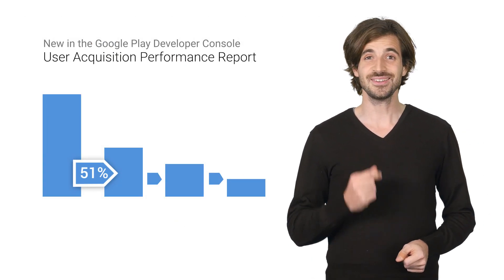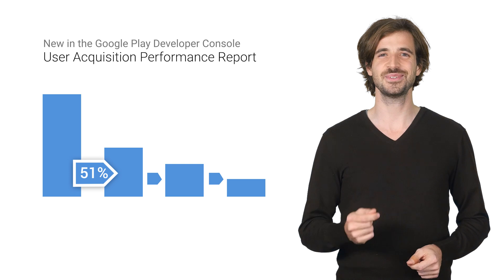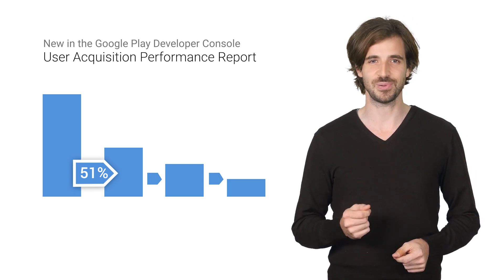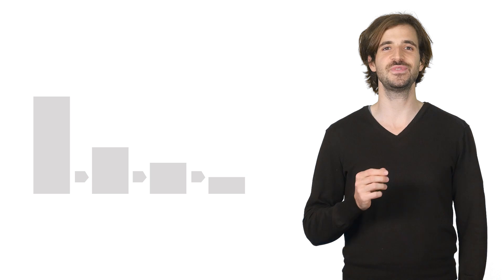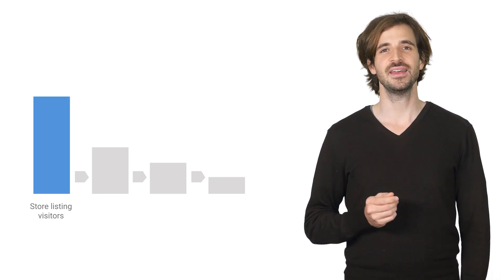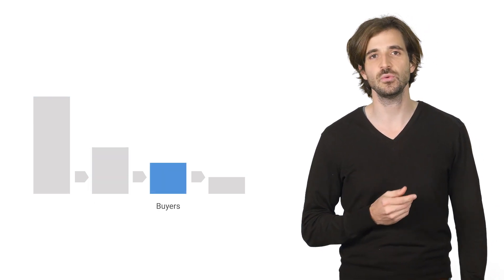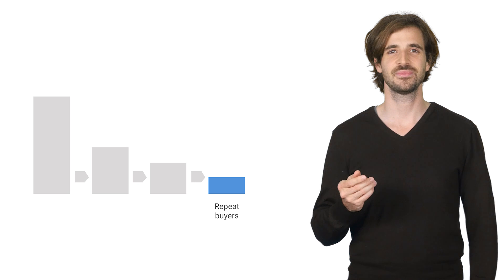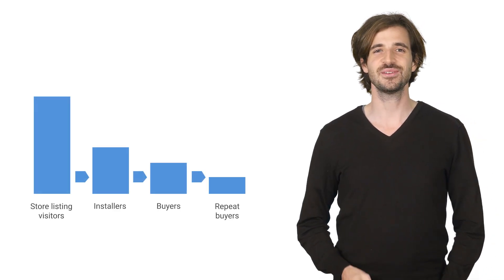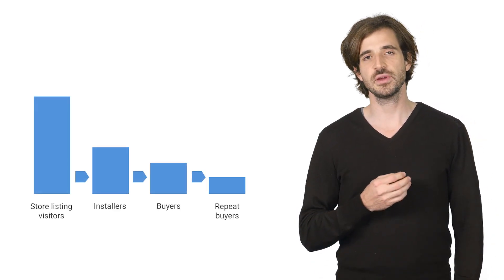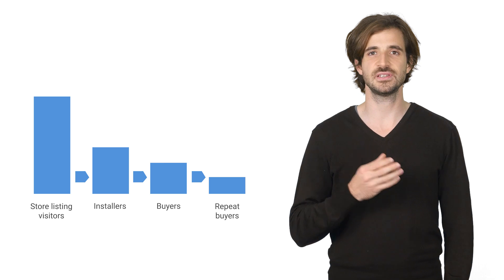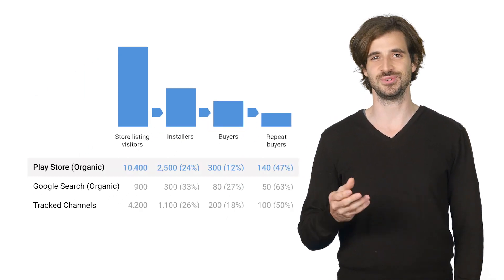You can now find answers to these questions in the user acquisition performance report in the Google Play Developer Console. The new user acquisition performance report summarizes how users discover your app and spend money. You can find out how many users visited your store listing page, installed the app, and eventually made one or more purchases. Looking at this information on your user funnel, you can choose areas to optimize or plan store listing experiments to explore different options.